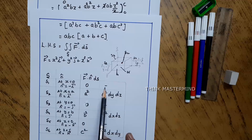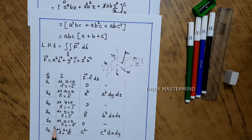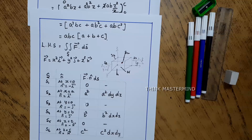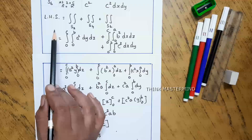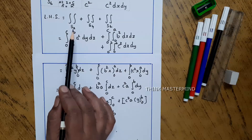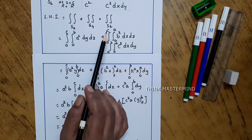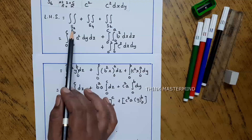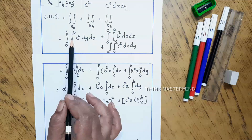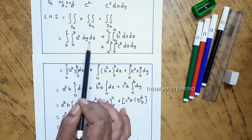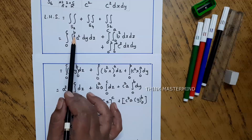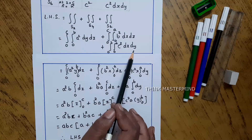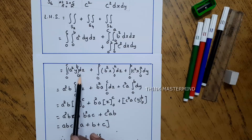Computing f dot n̂ dS for each surface: S1 gives 0, S2 gives a², S3 gives 0, S4 gives b², S5 gives 0, S6 gives c². Since S1, S3, and S5 are zero, the remaining surface integrals are S2, S4, and S6. From the table: S2 is the double integral of a² dy dz with y from 0 to b, z from 0 to c; S4 is b² dx dz; and S6 is c² dx dy, with corresponding ranges of x and z, and x and y.